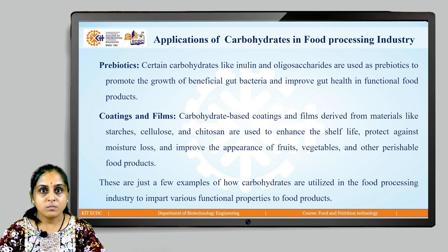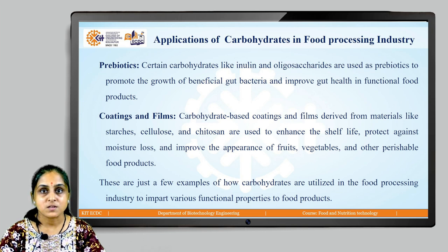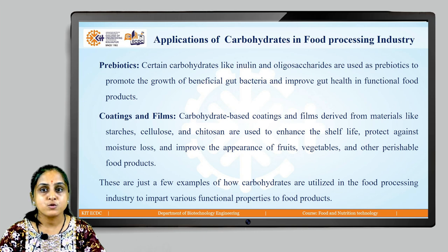Carbohydrates can be used as prebiotics. Certain carbohydrates like inulin and oligosaccharides are used as prebiotics to promote the growth of beneficial gut microorganisms. They can also be used as coatings and films. Carbohydrates like starches, cellulose, and chitosan are used to enhance shelf life, protect against moisture loss, and improve the appearance of fruits, vegetables, and other perishable food products.